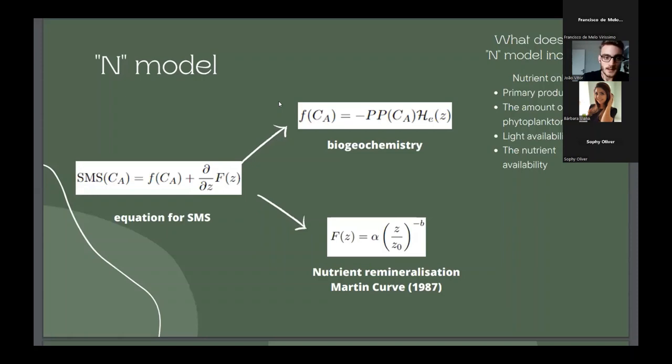Here I take one of the simplest models, the NPZD model, and because it's one nutrient only, and the equations for source minus sinks is split in two parts. The first part with lower F, we have the biogeochemistry involved here,